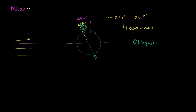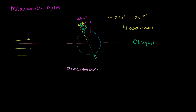Changes in the tilt, or obliquity, are just one of the factors playing into Milankovitch cycles. What I want to do in this and the next video is summarize all the different factors. Another one — less intuitive than tilt — is something called precession. The best analogy I can think of is a spinning top, or imagine Earth as a top that's spinning.